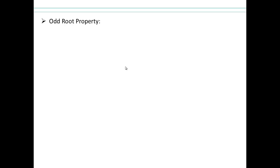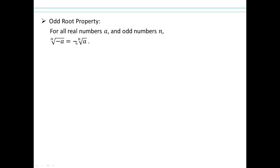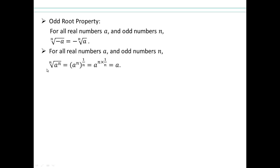Let's look at some properties of radicals. If you take the nth root of a negative number, you can pull the negative outside the root, because negative numbers raised to an odd power are negative. So for all real numbers a and odd numbers n, the nth root of a to the power n gives you a to the power 1, because the nth root is the same as the 1 over n power, and you multiply the exponents: n times 1 over n gives you a to the power 1.